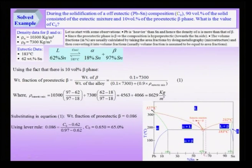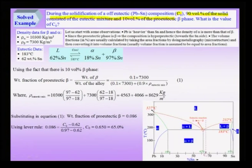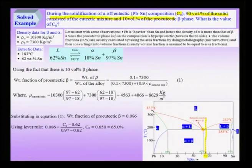Let us solve an example considering the lead-tin eutectic system. We assume we are solidifying a composition C0 and want to find C0, given that 90 percent of the volume fraction of the solid consists of the eutectic mixture and about 10 percent of the volume fraction is the pro-eutectic beta phase. Since the pro-eutectic phase is beta, the composition C0 lies to the right of the eutectic composition, which is 62 percent tin.